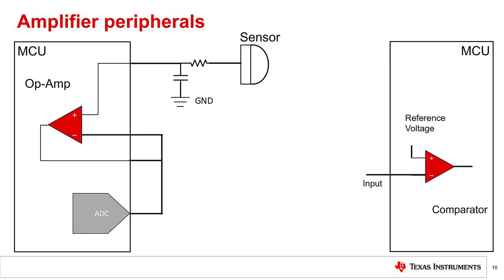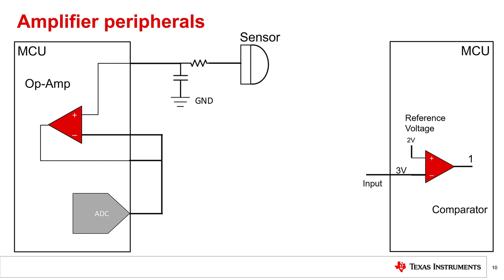Amplifiers are a useful group of peripherals that can amplify or condition an analog signal via operational amplifiers, or op-amps for short. Op-amps have many purposes and are frequently used in conjunction with data converters to translate real-world signals, such as light and sound, into electrical signals. The amplifiers group also contains comparators, which are peripherals that can inform the MCU when an input has crossed a set voltage threshold. This is really useful when you don't necessarily need to know the exact voltage level a signal is, but need to know quickly that the signal has crossed a critical threshold.